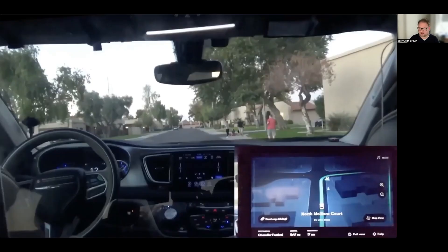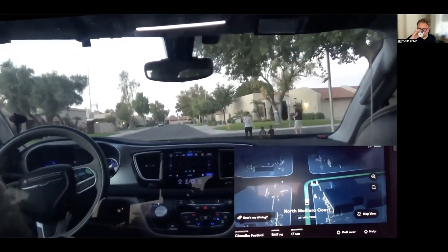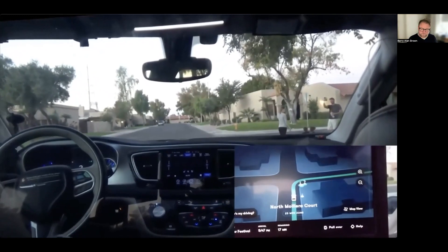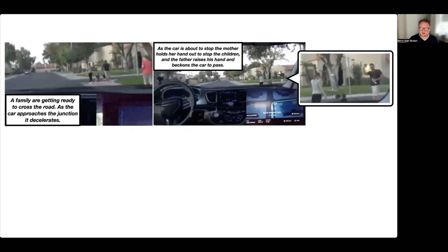Let me start by playing you a clip of a Waymo driving in a suburban street. It's going to have an interaction with this group of pedestrians who are waiting to cross. The video is recorded from the back seat of the car. You can see an insert there which also shows you the state of the Waymo's model of the world in the bottom right, so you can see that the car comes up to the intersection and the family gestures for the car to continue and keep coming around the corner.